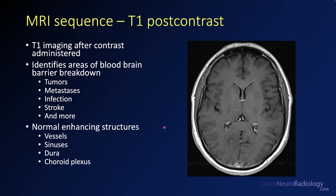One of the last sequences obtained is post-contrast imaging. Intravenous gadolinium contrast is administered and then additional T1 images are acquired. This identifies areas of blood-brain barrier breakdown — anything that disrupts normal cell membranes can cause leakage of contrast into those areas, making them bright. Pathologies that enhance include tumors, metastatic disease, infection, and stroke. To detect abnormal enhancement, be aware that certain normal structures also enhance: vessels, sinuses, the dura, and the choroid plexus. Here you can see a post-contrast image with small veins and enhancing choroid plexus, as well as the dural venous sinuses — these are normal enhancing structures.